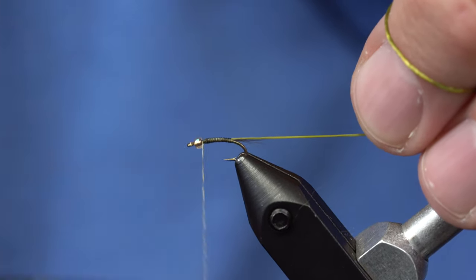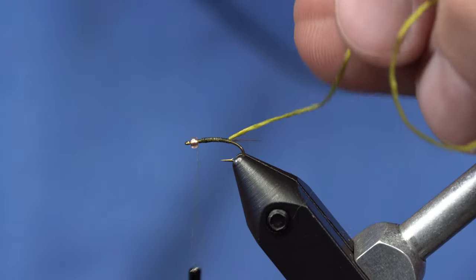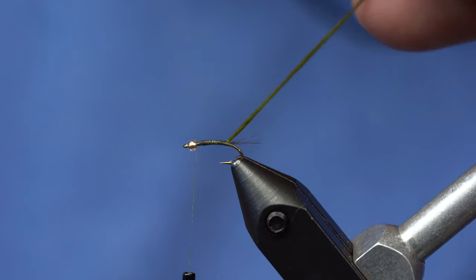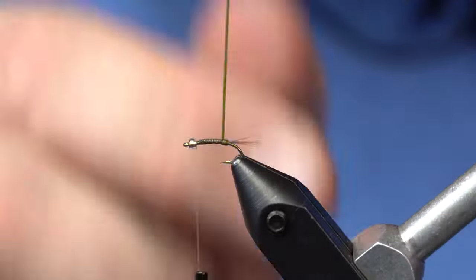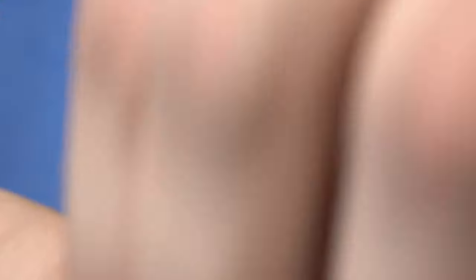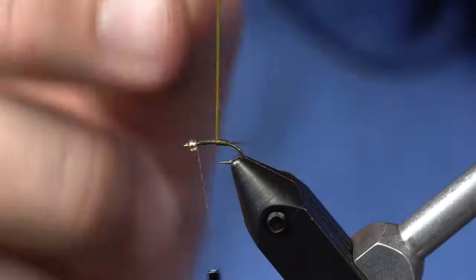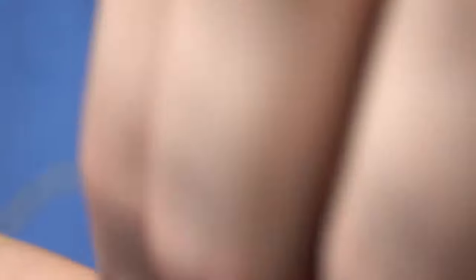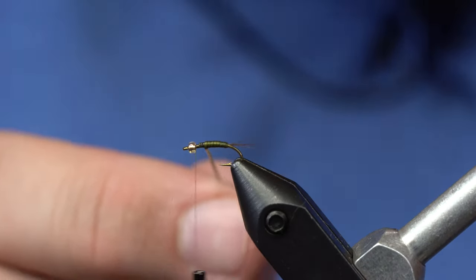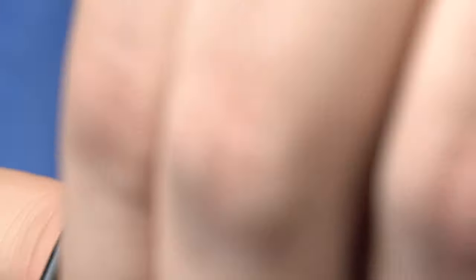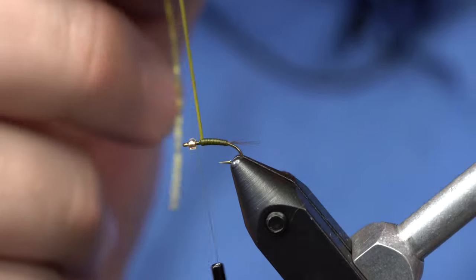So I've got that tied in all the way back to the tail and from here I'm going to take that and pull it fairly tight and start to wrap it forward. And as I get closer to where my wing case is going to be I let off the tension and so that starts to build a little bit of a taper into the body.